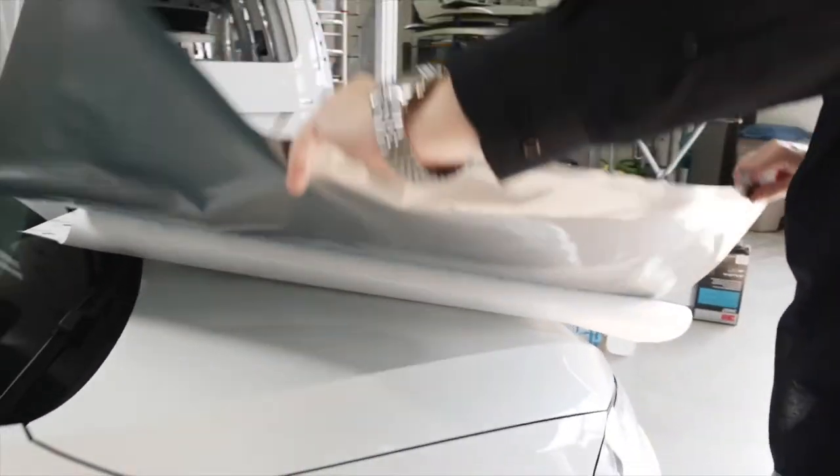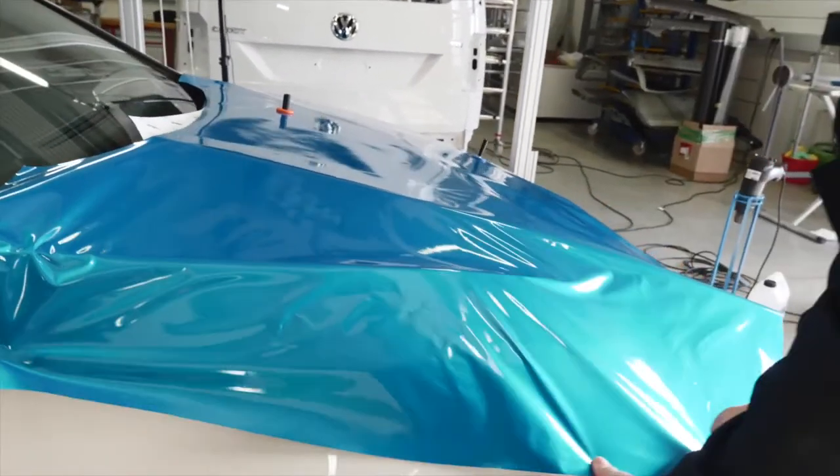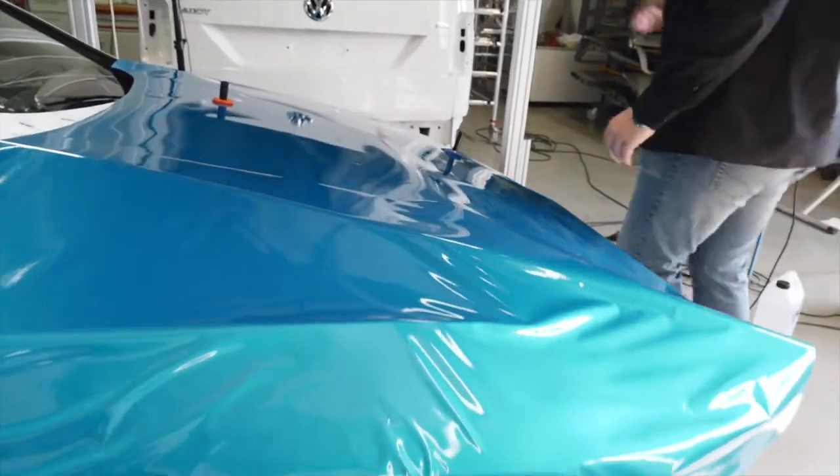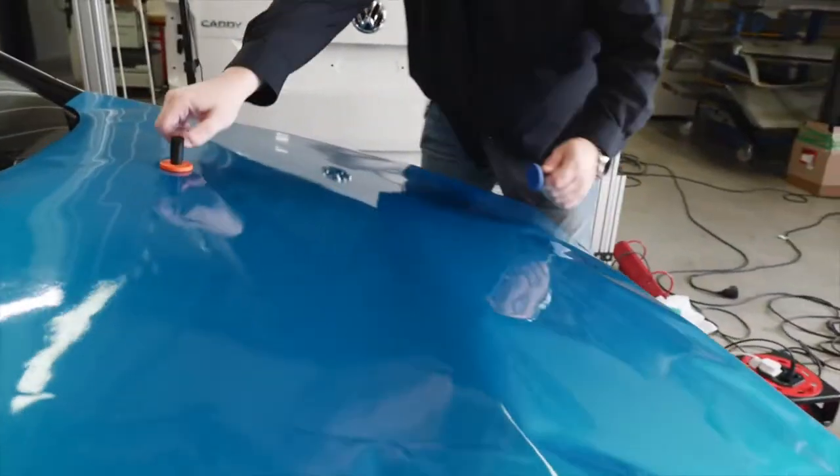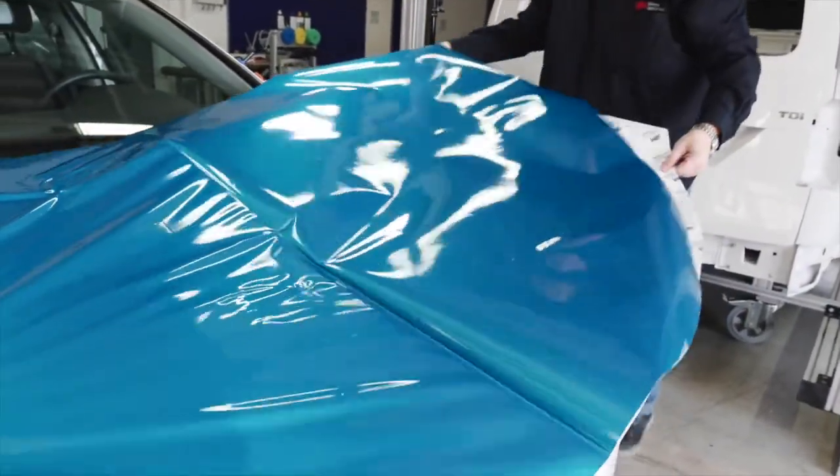Fold the film back and fix it to the surface at 2 or 3 points so that it doesn't slide away. Move to the other side of the car, remove the magnets and pull the liner out from under the film. This technique helps avoid trapping dust.